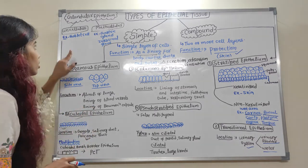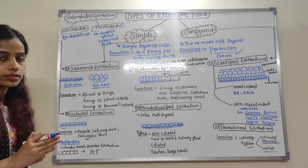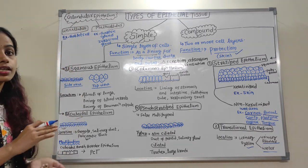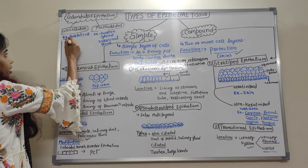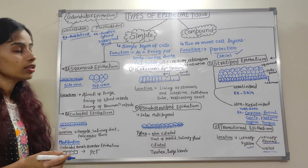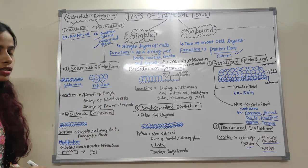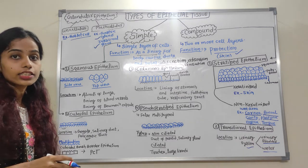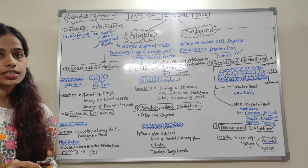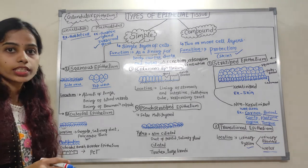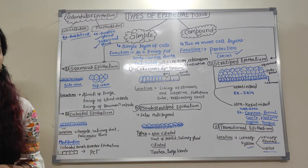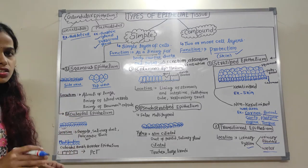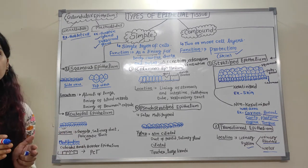Glandular epithelium is a modification of columnar and cuboidal epithelium. It is divided into unicellular and multicellular types. Unicellular glandular epithelium is found in goblet cells; multicellular is found in gastric and intestinal glands. Glands are further classified as exocrine (with ducts, secreting saliva, mucus, tears, etc.) and endocrine (secreting hormones and enzymes). Organs that function as both exocrine and endocrine are called heterocrine glands — for example, the pancreas.